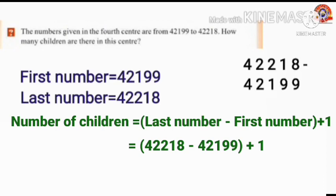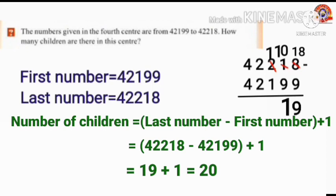42,218 minus 42,199: We can't subtract 9 from 8, so borrow 1 from 1. Then 8 becomes 18 and 1 becomes 0. 18 minus 9 equals 9. We can't subtract 9 from 0, so borrow 1 from 2. Then 0 becomes 10 and 2 becomes 1. 10 minus 9 equals 1. The result is 19. Then add 1 with this 19: 19 plus 1 equals 20.